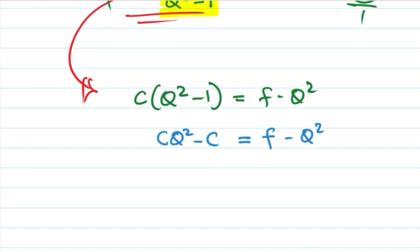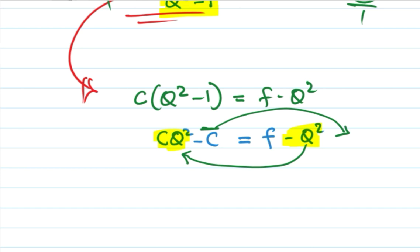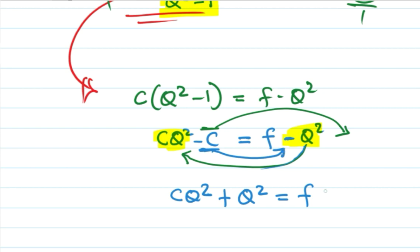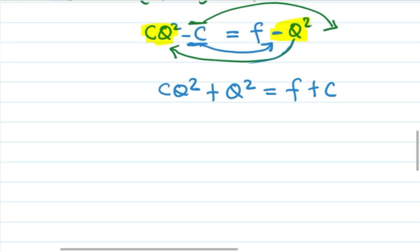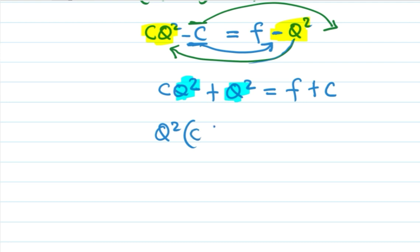Our mission is to have Q as the subject of the formula. So we combine the Q squared terms. We have C times Q squared plus Q squared equals F plus C. Let's factor out Q squared: Q squared times (C plus 1) equals F plus C.